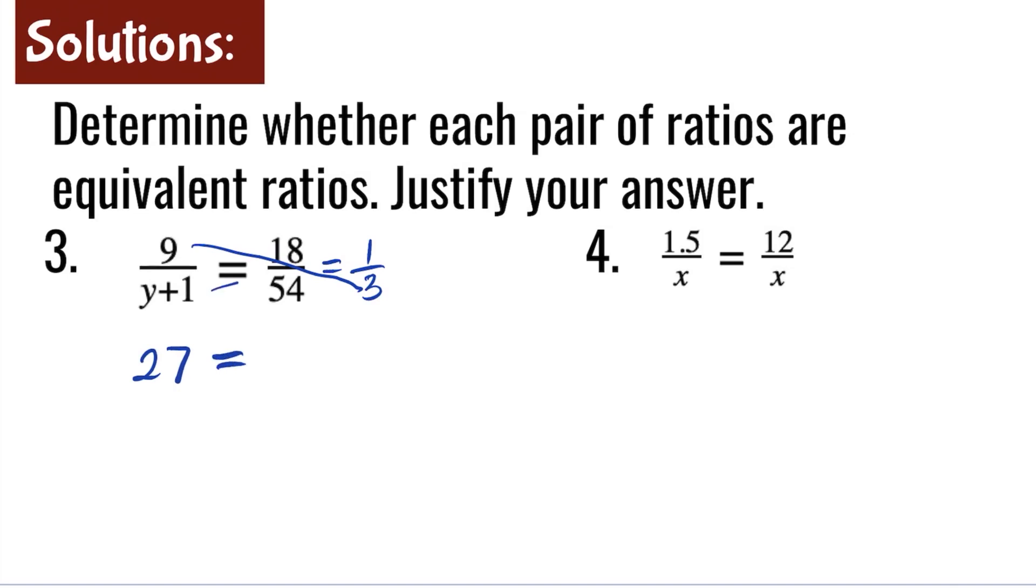This is equal to y plus 1 times 1, which is the same thing as 1y plus 1. Now we need to subtract 1 from both sides of the equation. 27 minus 1 is 26. And on the right side, 1 minus 1 is 0. So y is equal to 26.